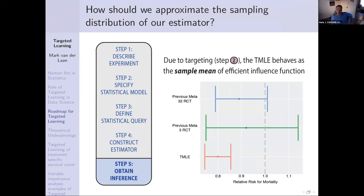Due to the targeting step, you can prove that the targeted maximum likelihood estimator — the plug-in estimator minus the truth — behaves like an empirical mean. It equals an empirical mean of a so-called influence curve, which is a function of the unit data structure (Wi, Ai, Yi), plus some second-order term. Therefore you can analyze it as if it's a simple mean, estimate the sample variance of the influence curve, divide by sample size to get the variance of your estimator approximately, and construct confidence intervals as the estimator plus or minus 1.96 times the standard error.